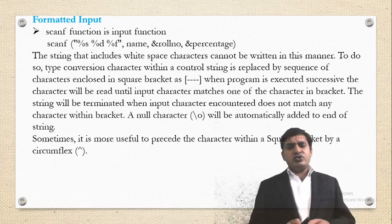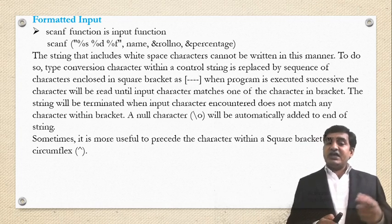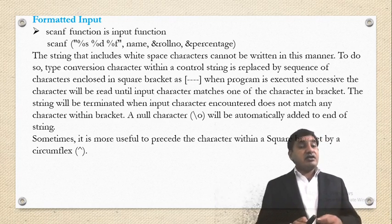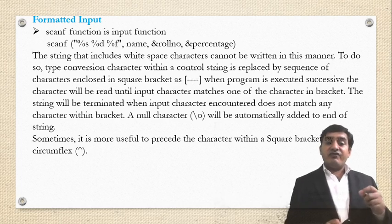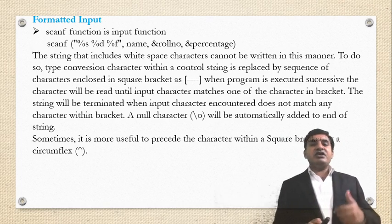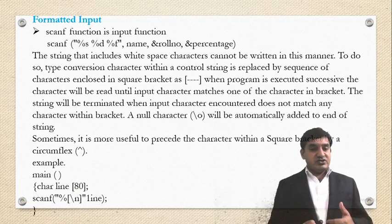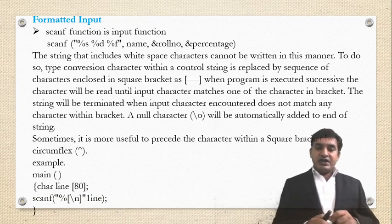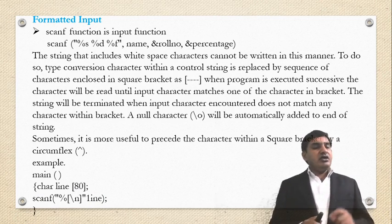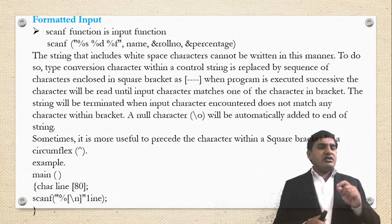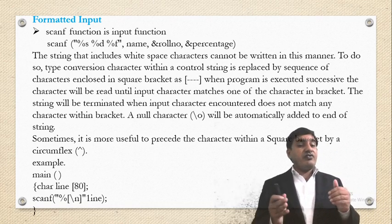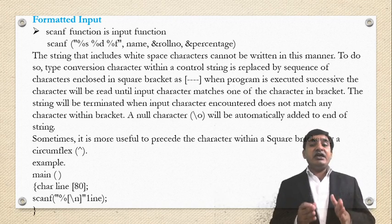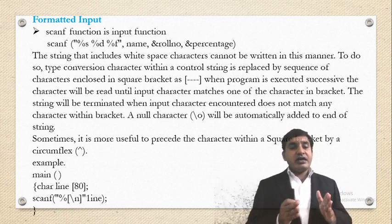Sometimes it is more useful to precede characters within a square bracket by a circumflex sign (^). This can be used — for example: main function with char line[80]. This is initialization of an array, and this array consists of 80 characters. Then the scanf function, which is an input function, is used to give input.